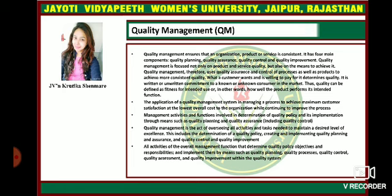The application of a quality management system in managing a process aims to achieve maximum customer satisfaction at the lowest overall cost, with the organization continuing to improve the process. Quality management activities and functions involve determining quality policy and its implementation through means such as quality planning and quality assurance, including quality control. It is the act of overseeing all activities and tasks needed to maintain a desired level of excellence — including determination of quality policy, creating and implementing quality planning, quality assurance, quality control, and quality improvement within the quality system.